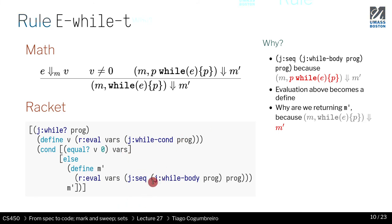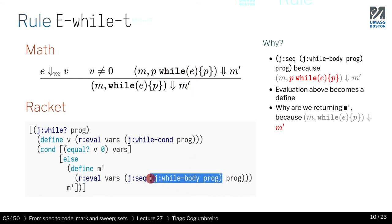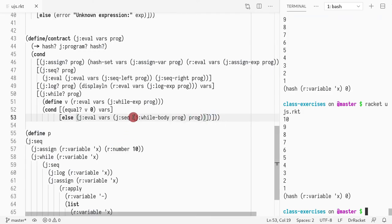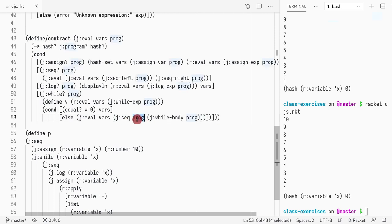The body of the loop is P, and prog is the while loop — the original loop. The order matters: you want to evaluate the body first and then the loop. If you did it the other way around — loop first then body — you would never update the variable, and therefore the loop would hang forever. That's why this ordering is critical.